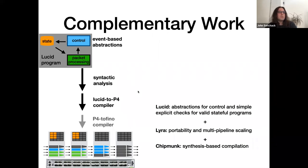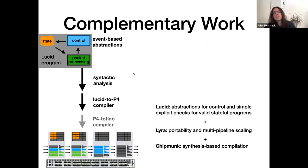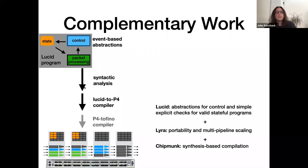Before going into detail, I want to mention that this concept of compiling high-level code to reconfigurable pipelines is a really huge problem, and Lucid doesn't solve all of it. There's some recent complementary work worth checking out — specifically Lyra and Chipmunk — which introduced techniques that let high-level data plane languages be more portable, scale across multiple pipelines, and compile more efficiently. If you're familiar with these languages, you can think of Lucid as building on them by first introducing abstractions that enable control logic in the data plane, and second introducing a more powerful type system and syntactic analysis that catches a much wider class of uncompilable programs.